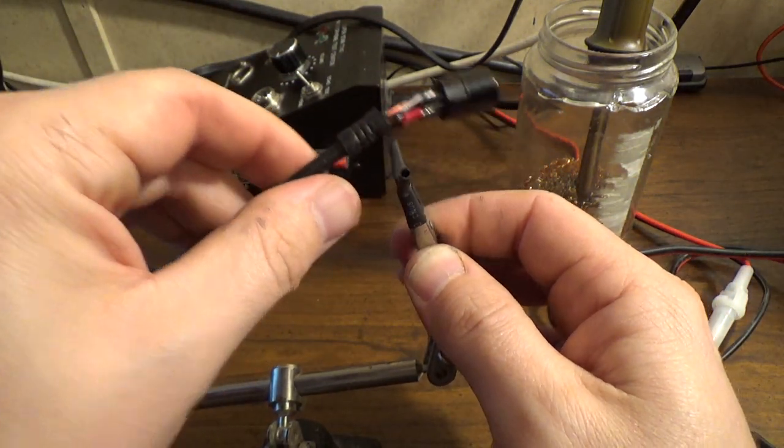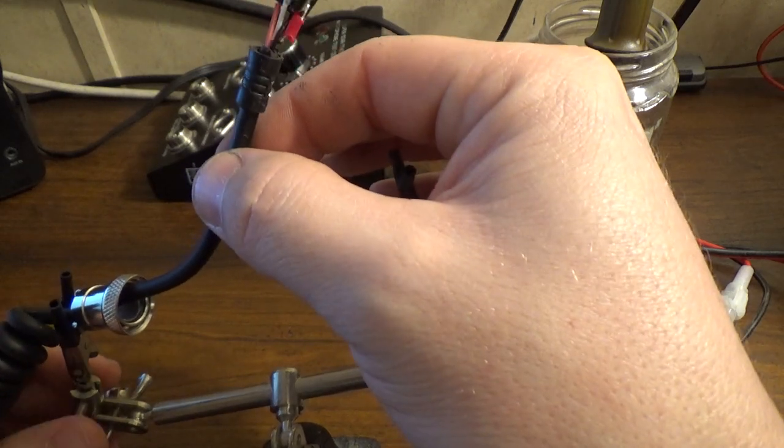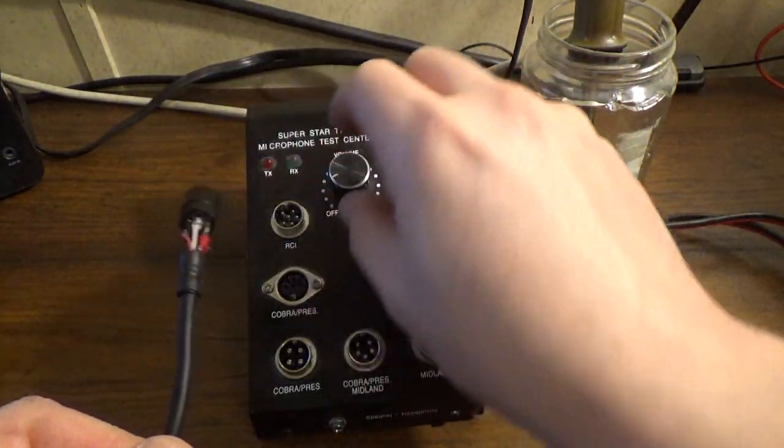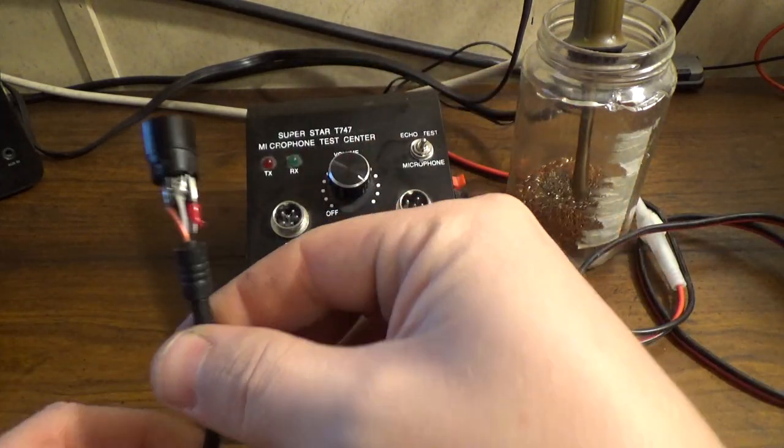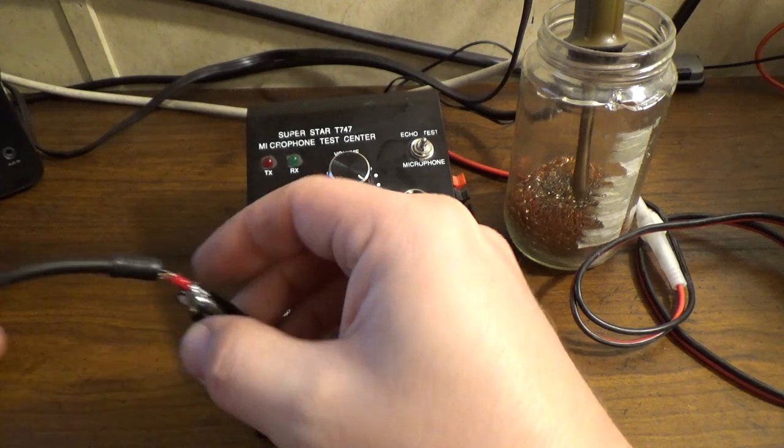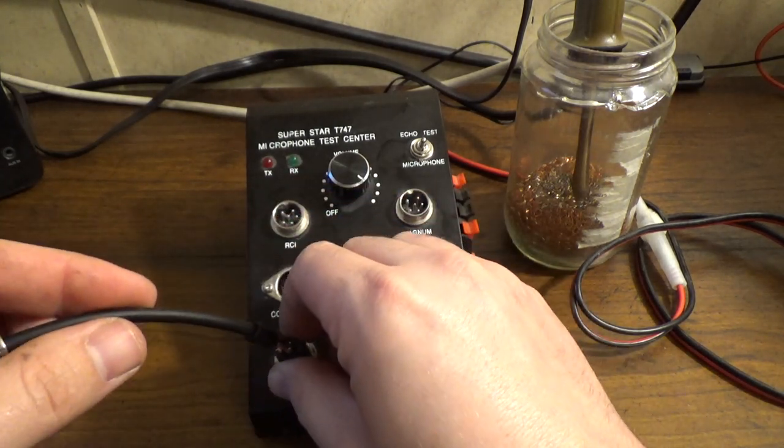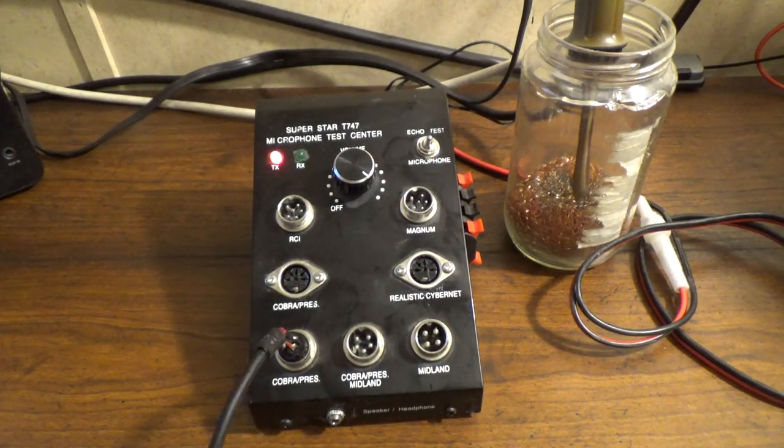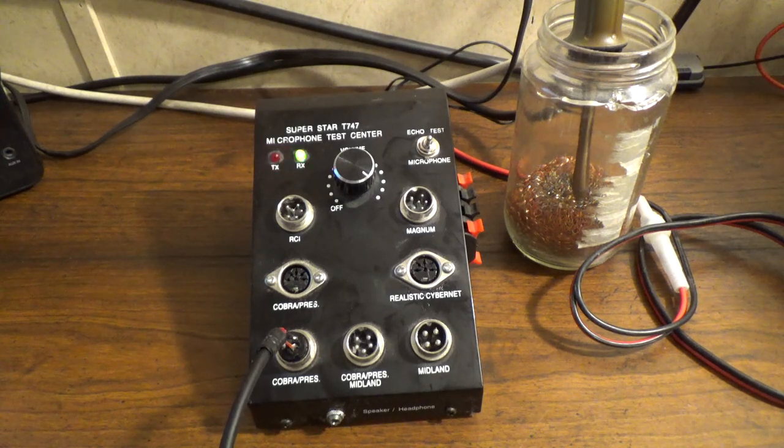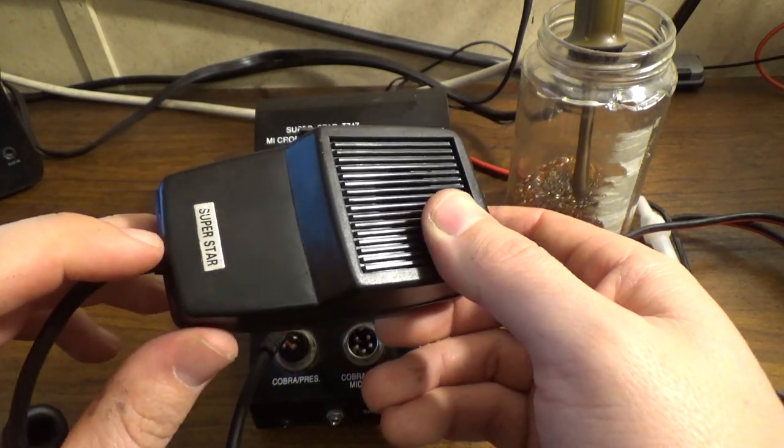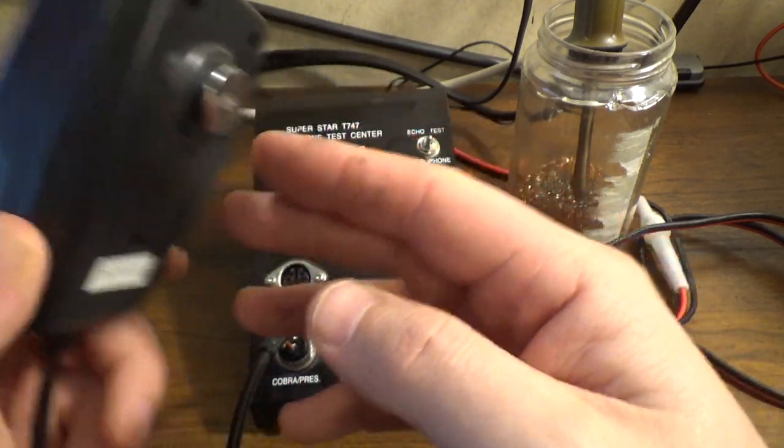Alright, so let's test it before we put it all back together. So we should be able to turn this on. Now when we first plug this in, it should say RX right here. Alright, we have receive. Audio check one, two, three, four, five. And we have rewired our four-pin Midland to be a four-pin Cobra microphone.